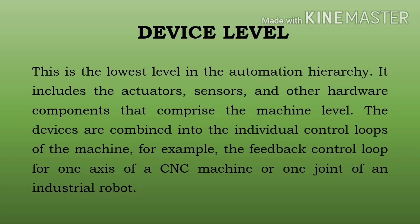First: device level. This is the lowest level in the automation hierarchy. It includes the actuator, sensor, and other hardware components that comprise the machine level. Actuator ek aisa device hai jo controller ke signal ko physical parameter mein change karta hai. Sensor ek aisa device hai jiski sahayata se physical variable ko pahchana jata hai tatha use signal mein convert kiya jata hai. Is tarah ke aur bhi hardware components hain jo machine level se attach hote hain.